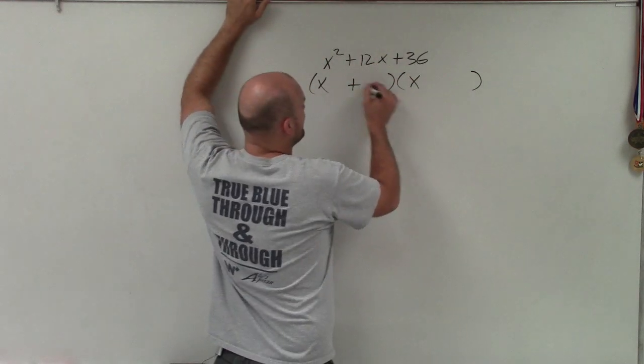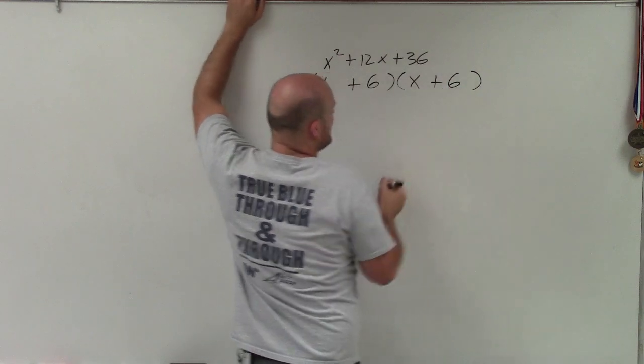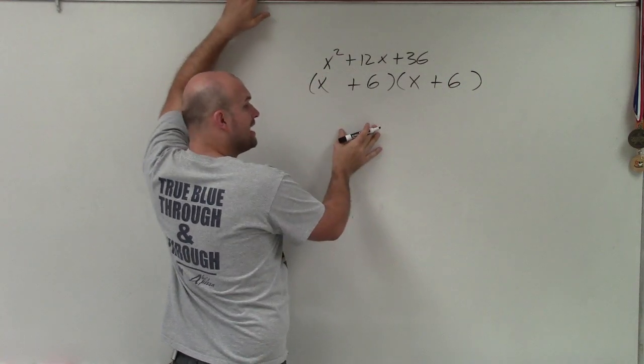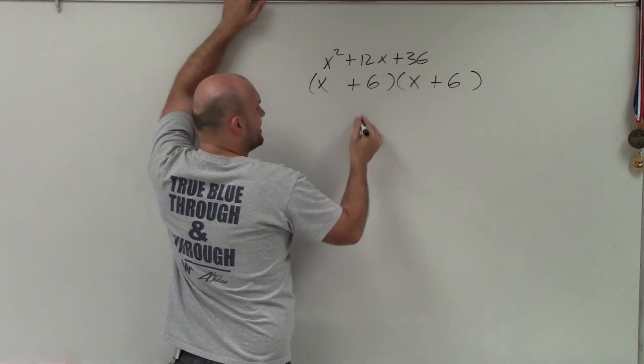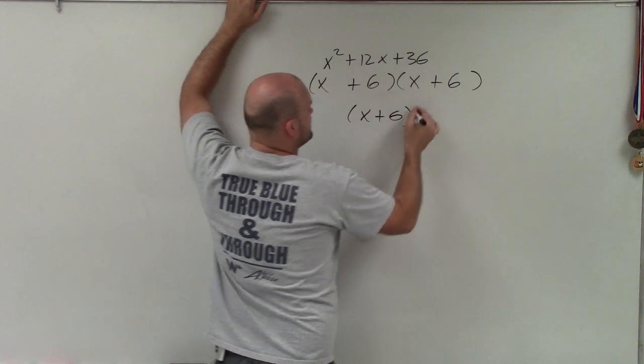Yes, it does. Therefore, this is a perfect square trinomial, which can be factored into a binomial squared. Since these are the same factor multiplied by each other, we can write this as (x + 6)².